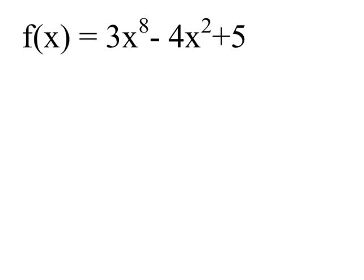In our first example, f(x) = 3x^8 - 4x^2 + 5, we have an exponent of 8, which is even, an exponent of 2, which is also even, and then at the end, even though we don't see it, there is an x^0 on the constant, because x^0 is 1, and 5 times 1 is 5.